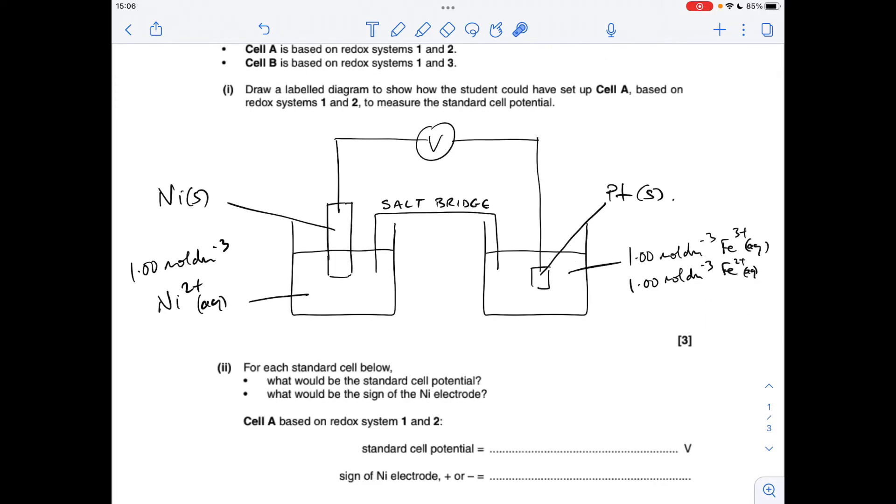Part two: to work out the standard cell potential, we take the most positive standard electrode potential and subtract the least from it. So for cell A, which is based on systems one and two, it will be 0.77 minus -0.25, which gives a voltage of 1.02V. The most positive electrode potential is the positive electrode. You'll see that nickel had the least positive of the two electrode potentials, and so it is the negative electrode.